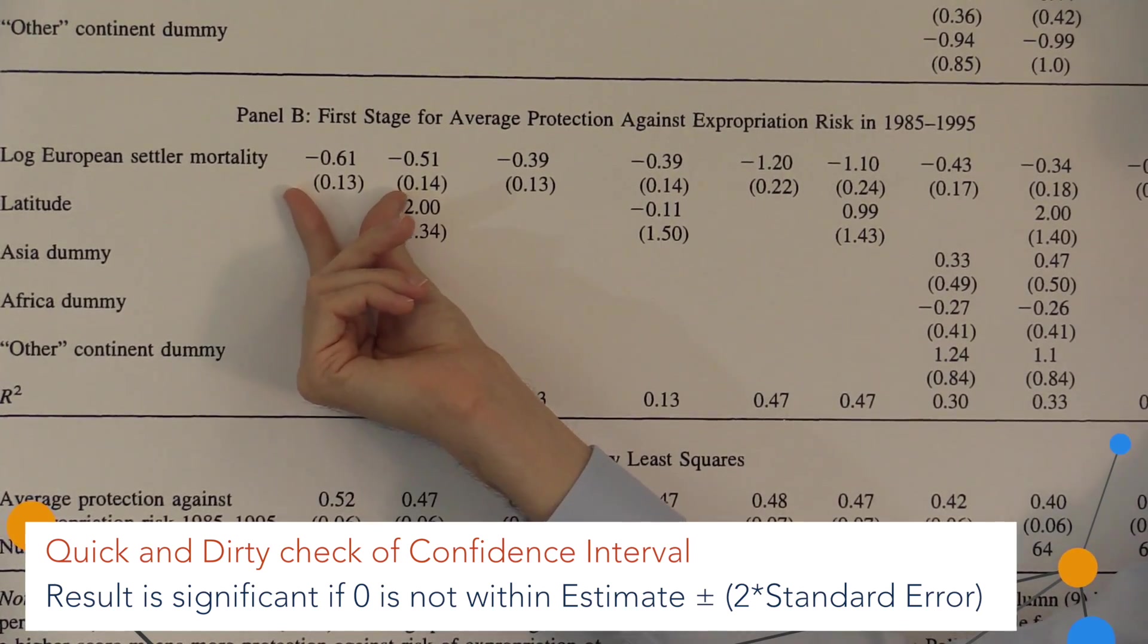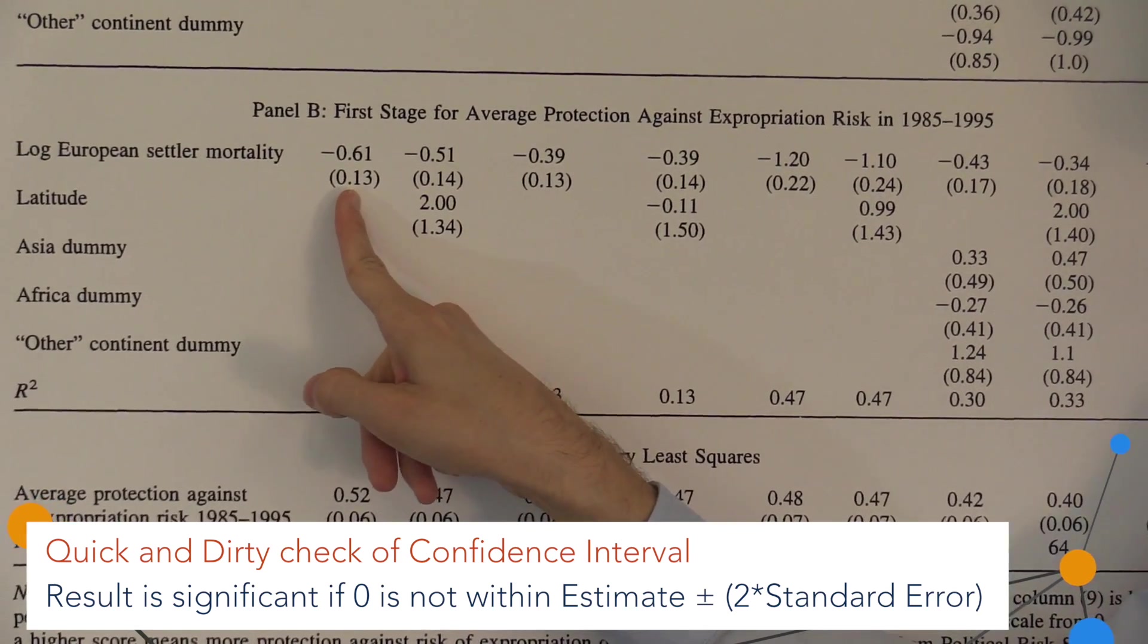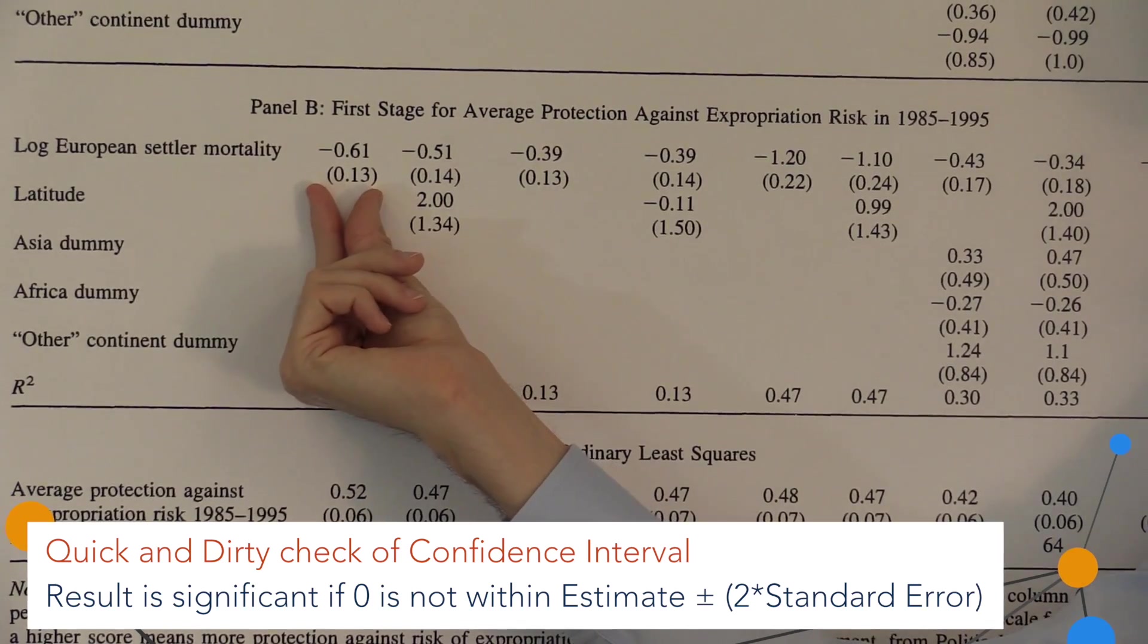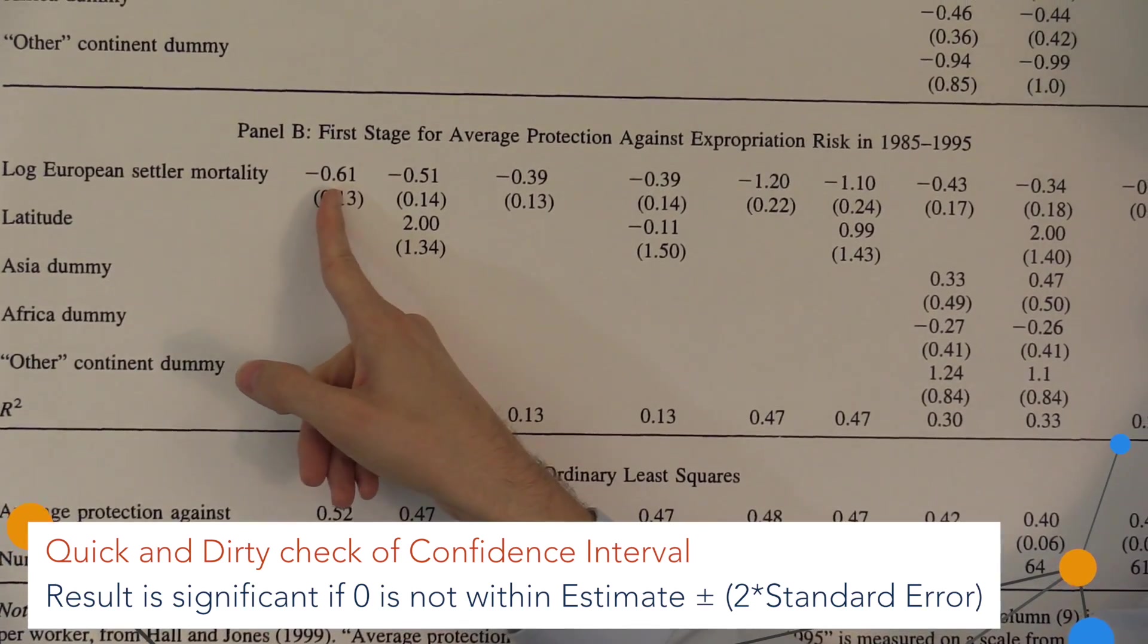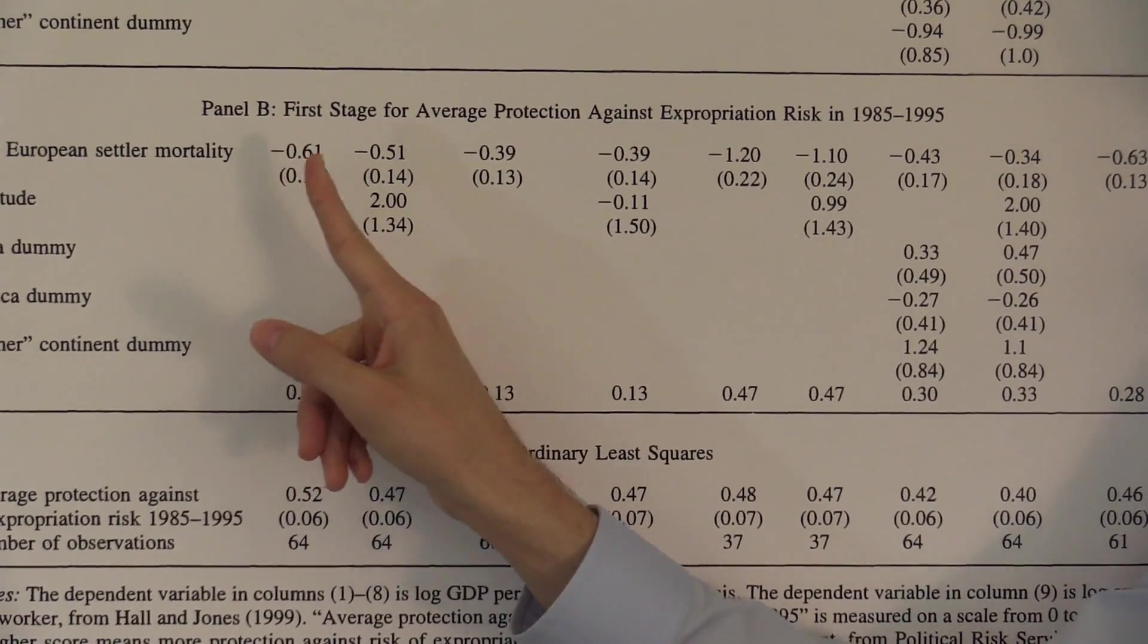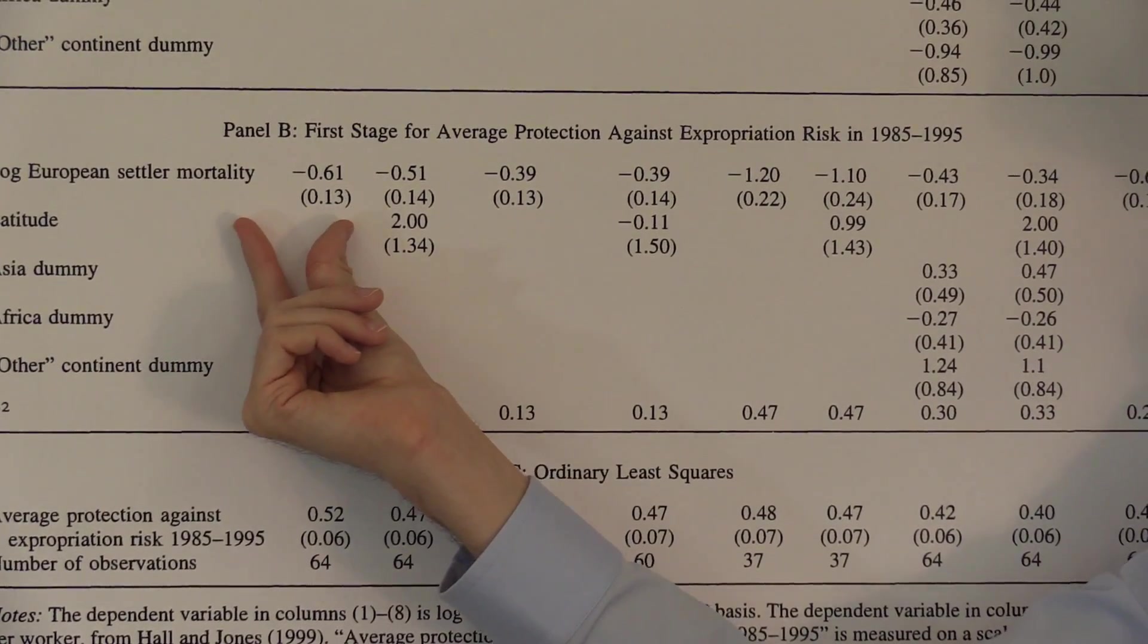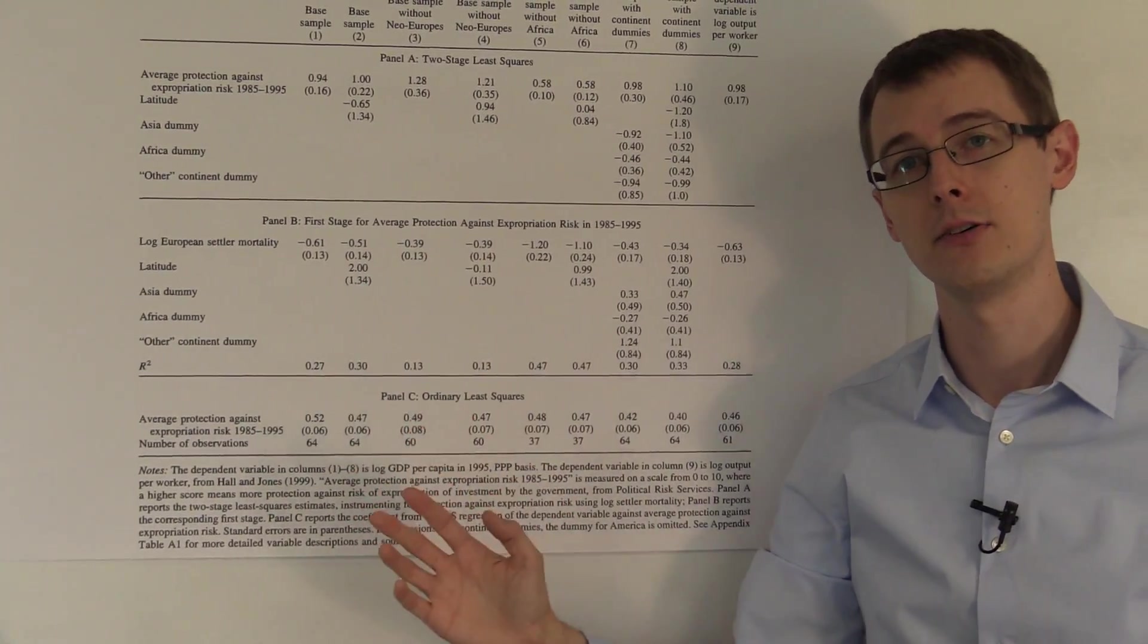And we see that there's a negative coefficient, minus 0.61. And this in parentheses, that's the standard error. So we could use that to construct a confidence interval for this point estimate of the coefficient, and we'd find that this is a statistically significant estimate. It is not zero.